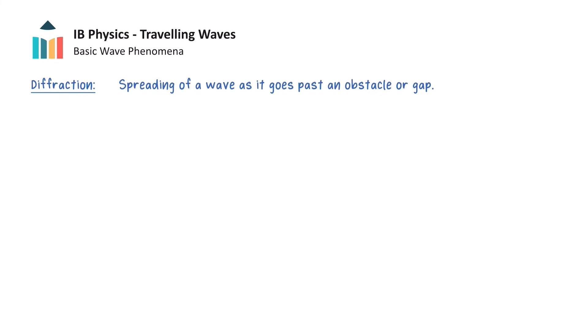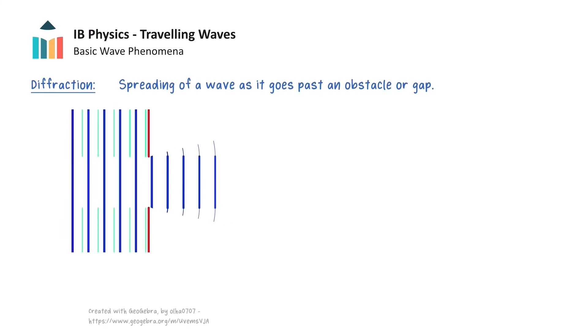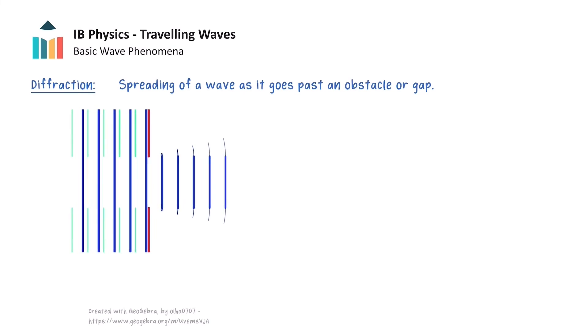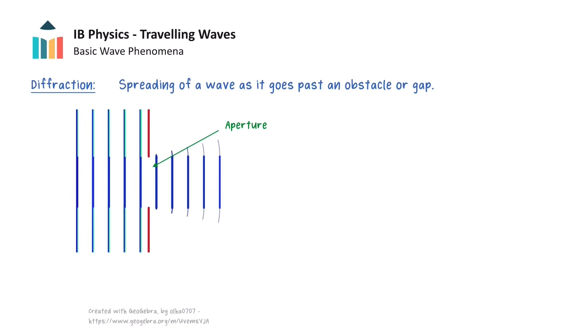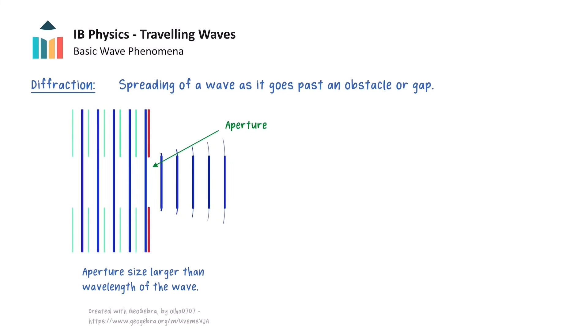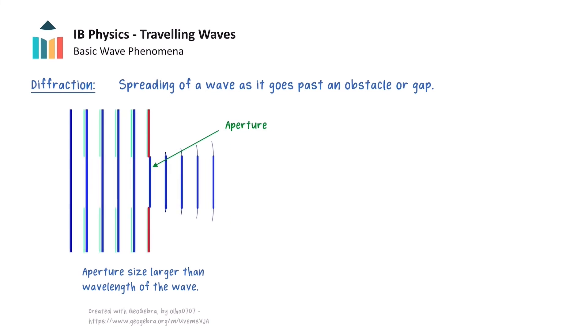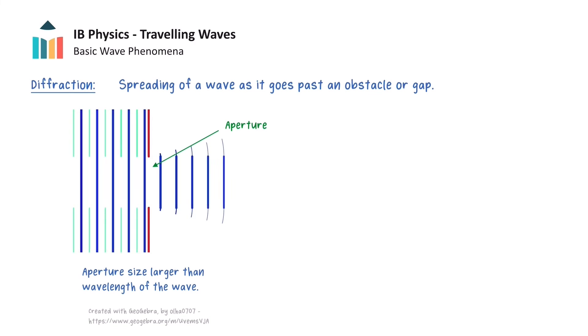Our final topic in this video is diffraction. Diffraction is the process of waves changing direction without the waves being incident at a boundary between two different media. It causes the spreading out of a wave and occurs when waves go past an obstacle or through a gap, which is sometimes called an aperture or a slit. When the width of the aperture is larger than the wavelength of the wave, the spreading of the wave only occurs at the edges of the aperture and the wave passes through with only slight diffraction.